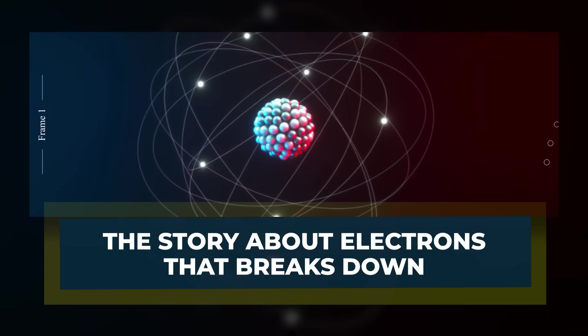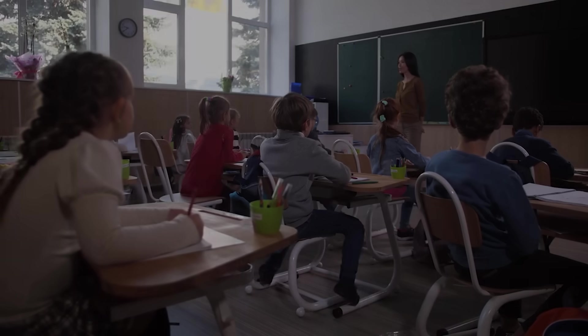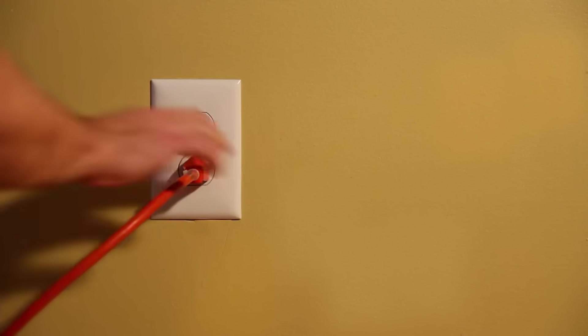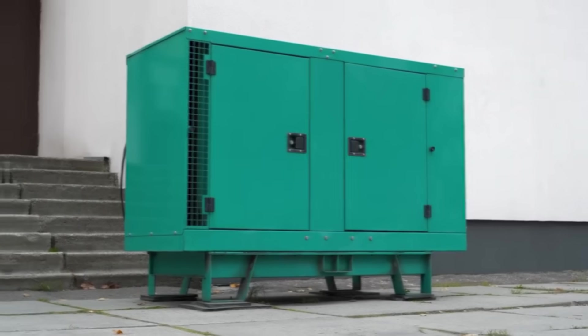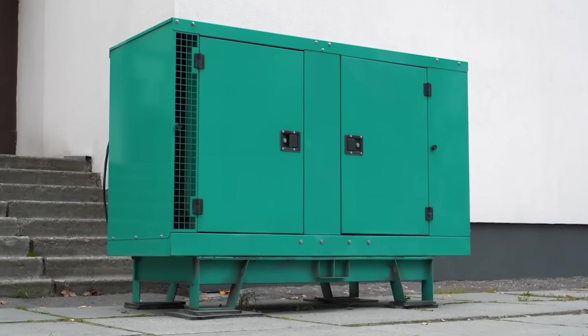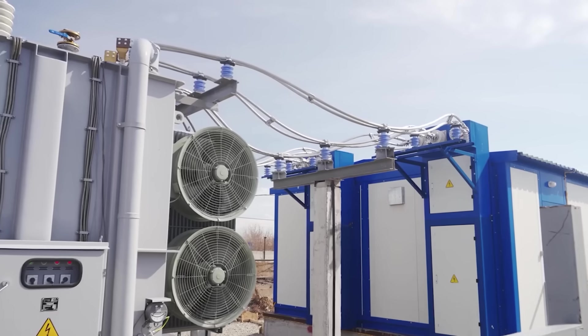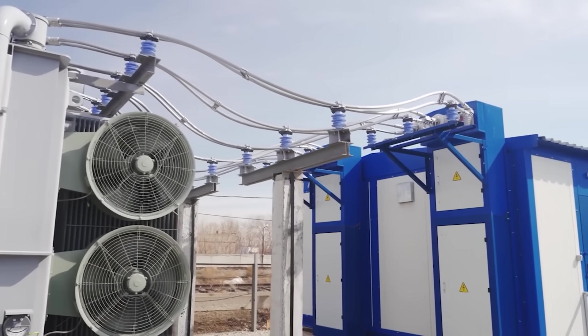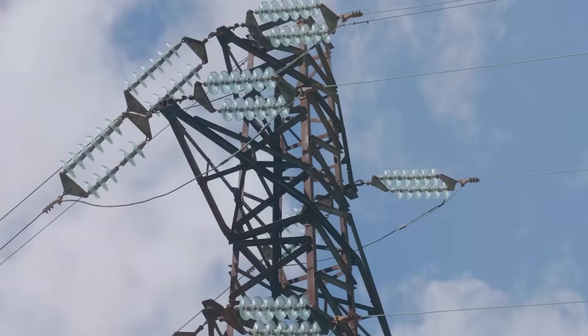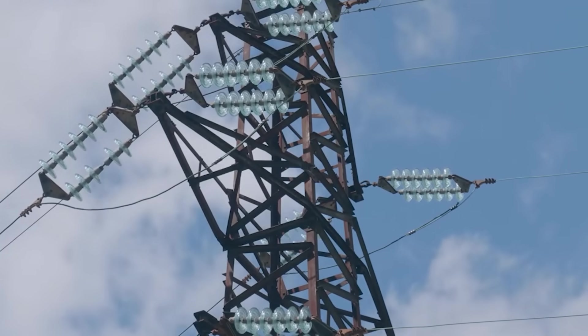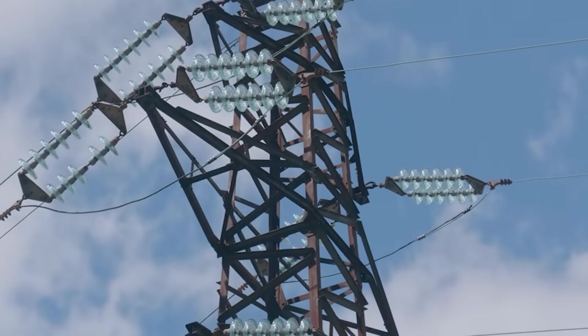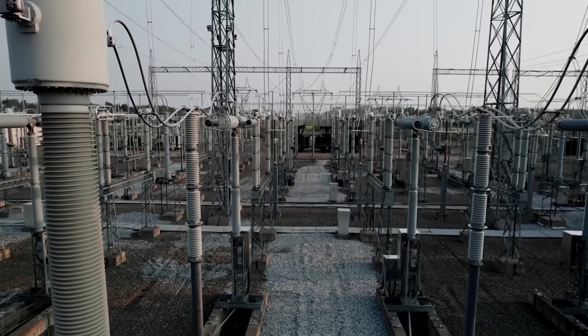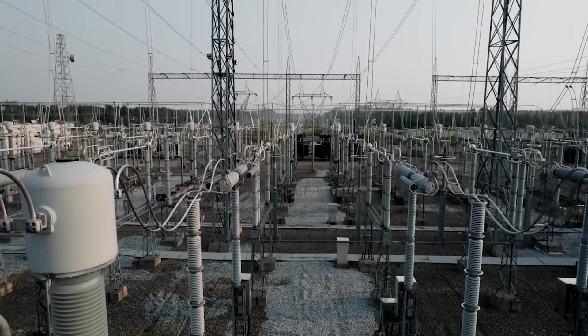The story about electrons that breaks down. A common classroom picture treats power lines like a clear plastic tube, and electrons like a linked chain inside it. A generator pushes and pulls the chain 60 times a second, and a toaster uses the energy because electrons squeeze through the hot element and dump their energy as heat. The picture feels friendly, and it helps people accept alternating current, where charge sloshes back and forth instead of streaming one way.